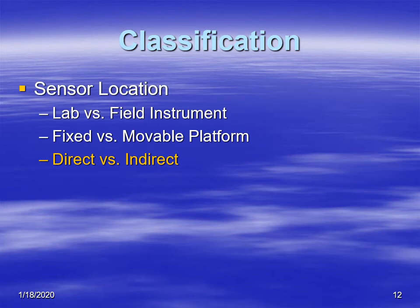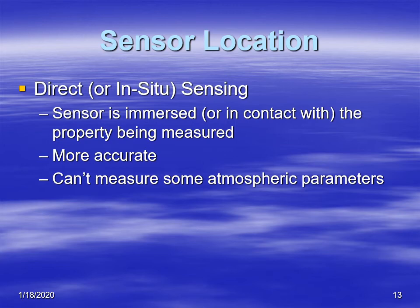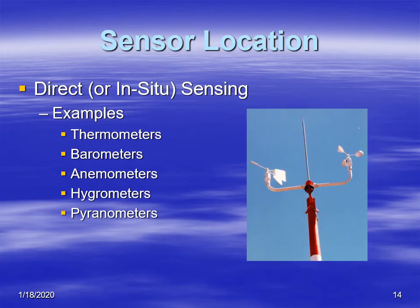Another way to classify sensor location is whether it makes direct or indirect measurements. A direct measurement — also called in situ in Latin — is when the sensor is surrounded or immersed in the property it's trying to measure. For example, a thermometer is in contact with the surrounding air, which makes it a direct measurement. Direct sensing is typically more accurate, but not everything can be measured directly. Examples of in situ instruments include thermometers, barometers, and anemometers.